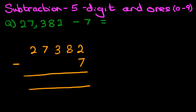Let's label the columns as well. We've got units, tens, hundreds, thousands, and ten thousands.